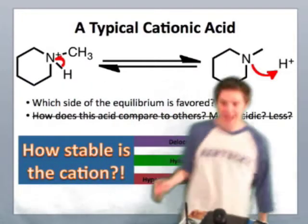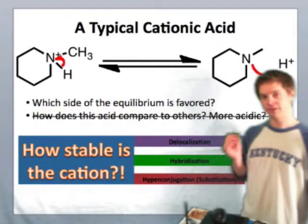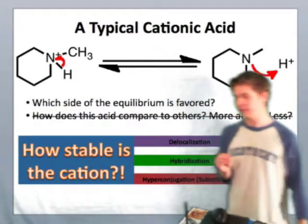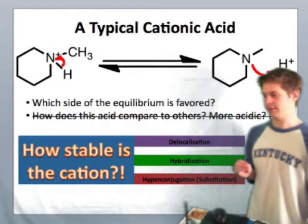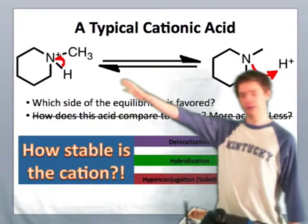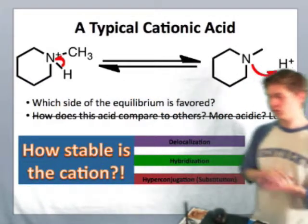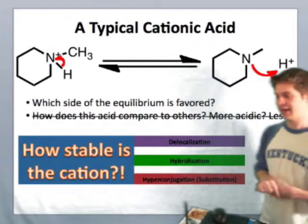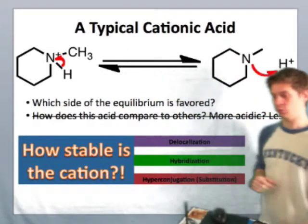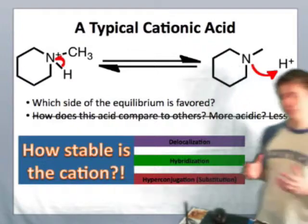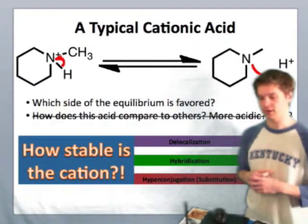How stable is the cation is really the important question here. That's because it's the stability of the charged species, once again, that determines the direction of an acid-base equilibrium. It's really going to be this unique charged species — the charged ammonium group — that's going to determine how acidic it actually is. The more stable this is, the less reactive it will be. The less stable this is, the more reactive and more acidic it becomes.